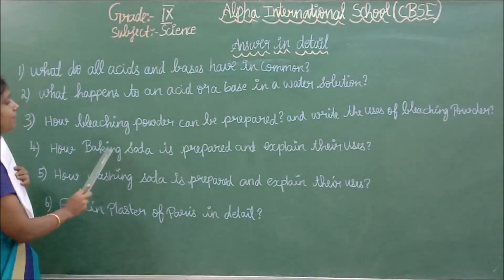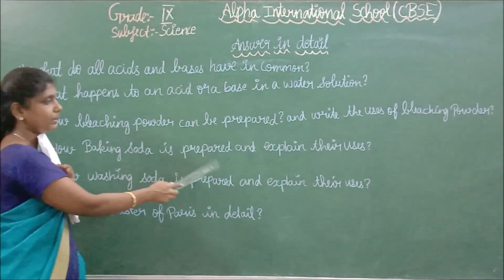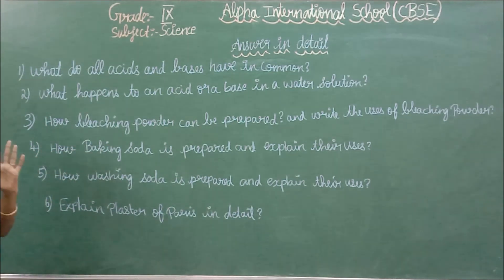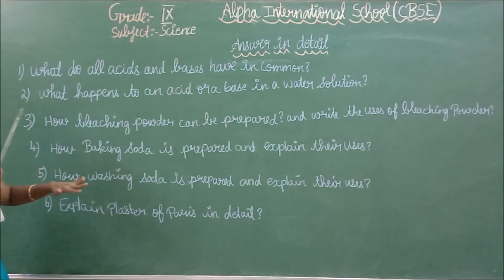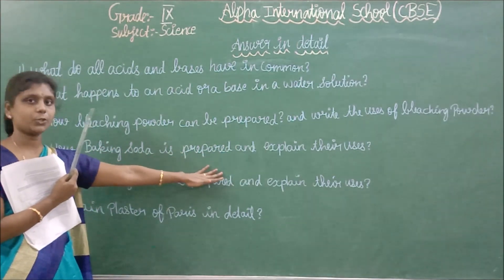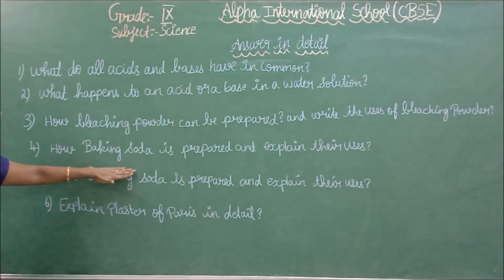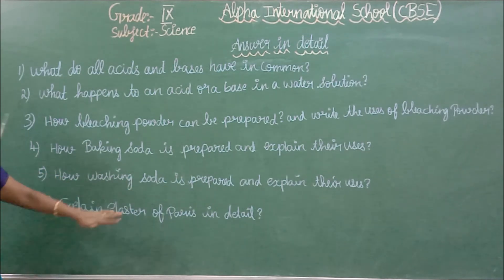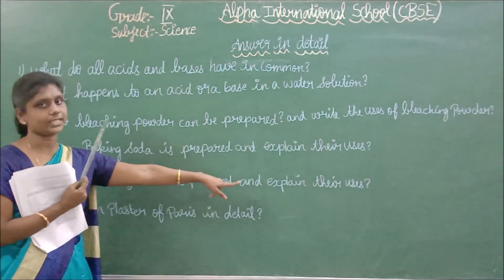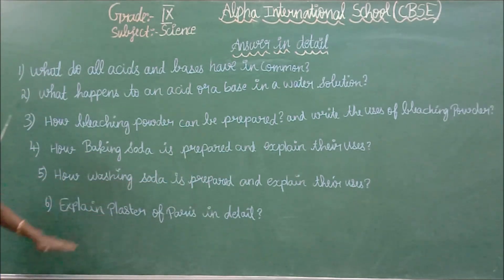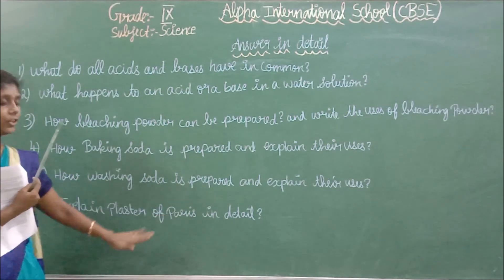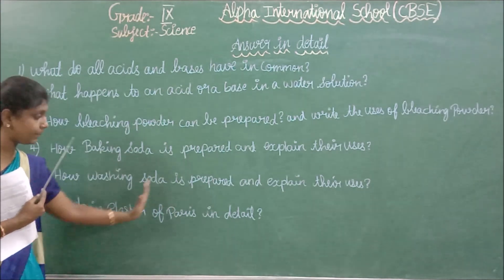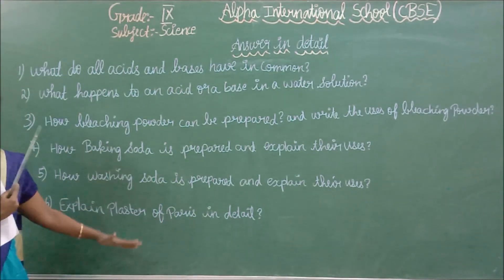Third question: how is baking soda prepared, and explain its uses. You should write the preparation steps and explain the uses of baking soda. Similarly, how is washing soda prepared and what are its uses? Also, explain plaster of Paris in detail — write the chemical name and explain it thoroughly.